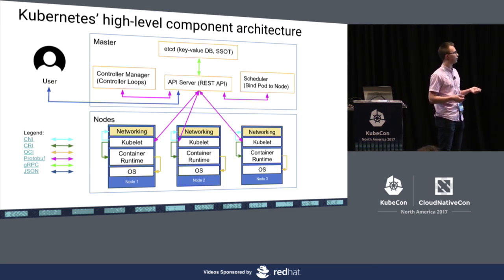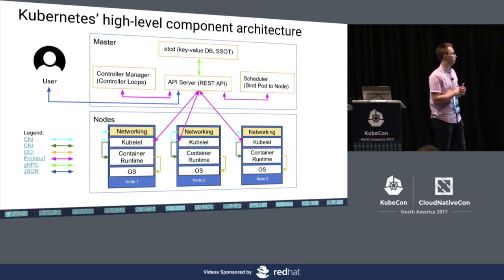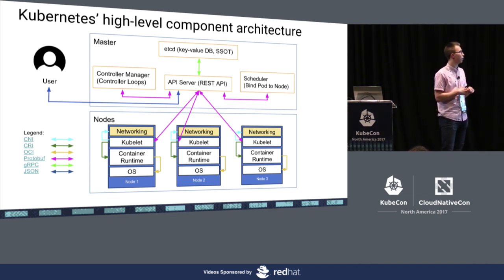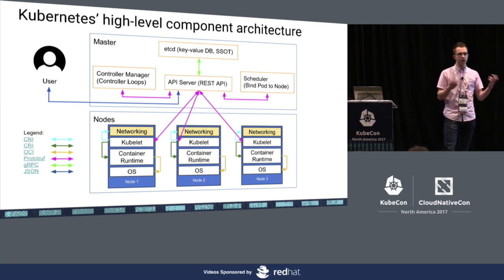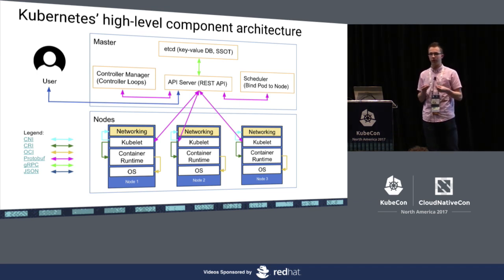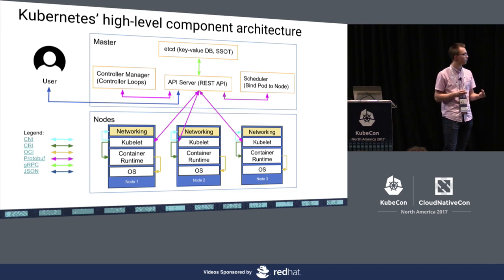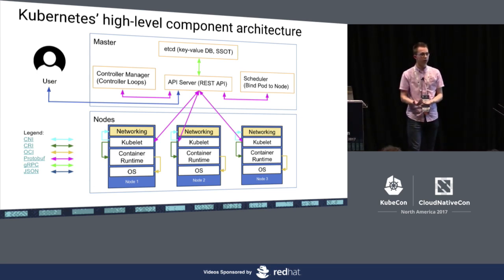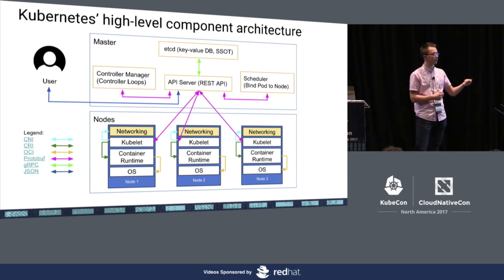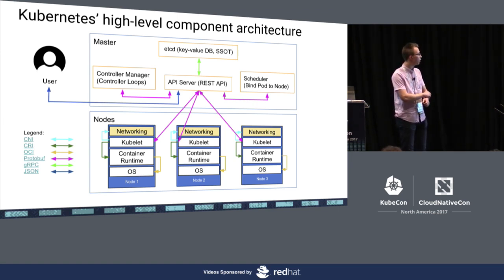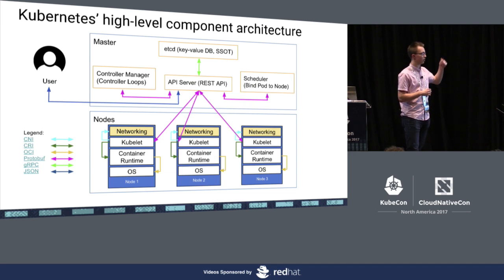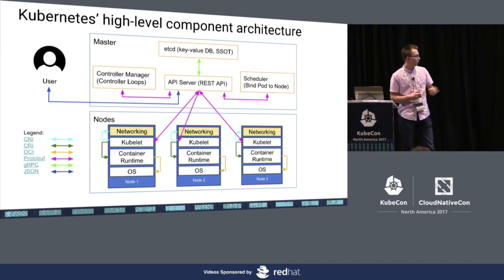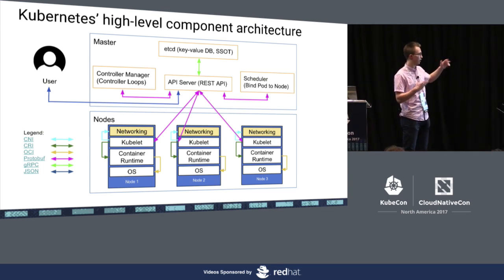Here is the high-level component architecture for Kubernetes. We have the master with an API server, which is stateless — basically a REST API in front of etcd. The controller manager runs dozens of controller loops to reconcile desired state with actual state. When you create a deployment, the controller manager creates replica sets and pods, the scheduler binds those pods to a node, which triggers the kubelet to run the container image using the container runtime. We have all these beautiful interfaces: CNI, CRI, OCI, and so on.